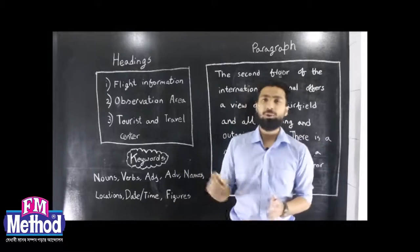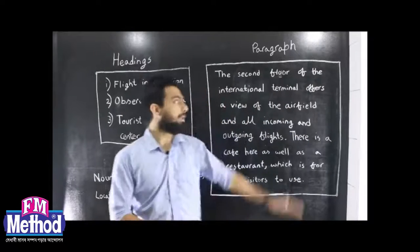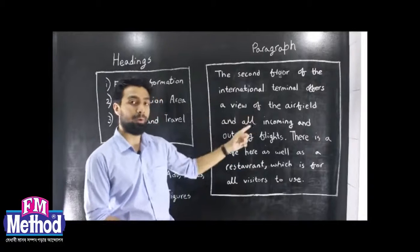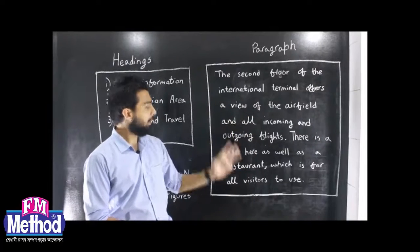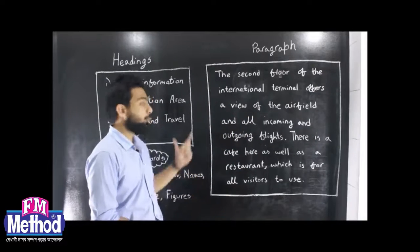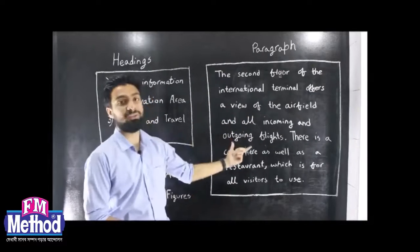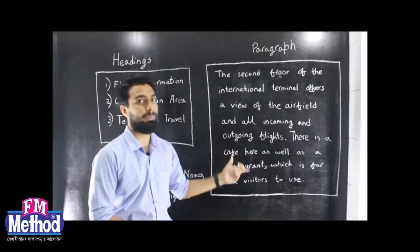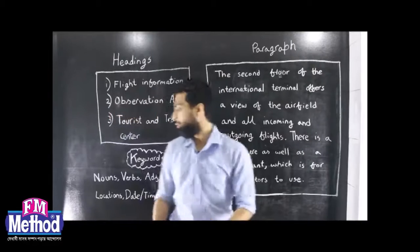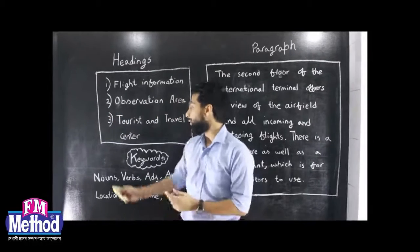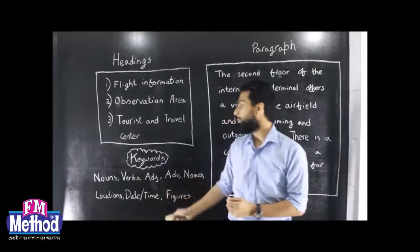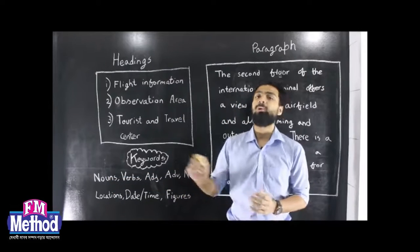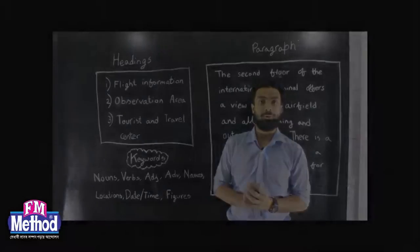What we have to do is: first, we check if there are any numbers. If there is no date and time, and if there are no capitalizations, then we look for names and locations. If none of those exist, we focus on nouns, verbs, adjectives, and adverbs.